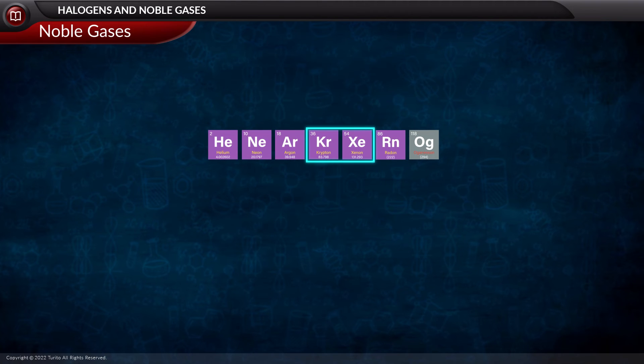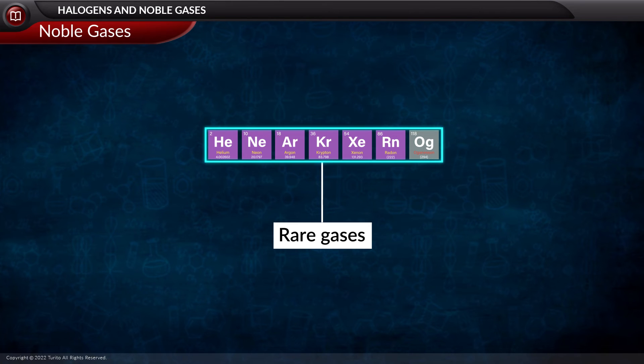However, Kr and Xe show reactivity. Now the noble gases are also called rare gases. They were known to occur very rarely on Earth. They were also called inert gases because they were chemically passive.